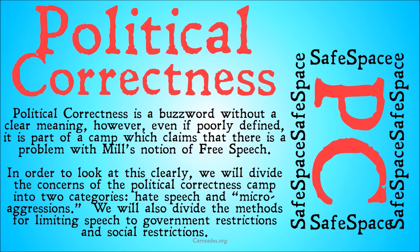Those that advocate for this amorphous notion of political correctness seem to, at the very least, fit into that camp because they're arguing for in some way limiting speech. In order to look at this more clearly, we're going to divide the concerns of the political correctness camp into two categories: one that we're going to call hate speech, and one that we're going to call microaggressions. We're also going to divide the methods for limiting speech to government restrictions and social restrictions, and we're going to talk about Mill's opinions on both.